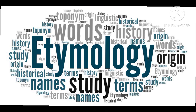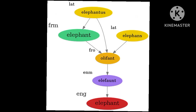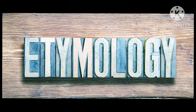For languages with a long written history, etymologists make use of texts of language and texts about the language to gather knowledge about how words were used during earlier periods, how they developed a meaning and form, or when and how they entered the language.